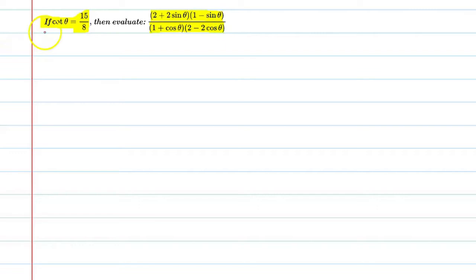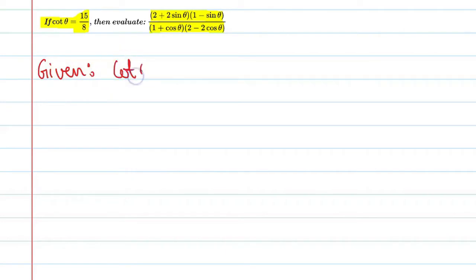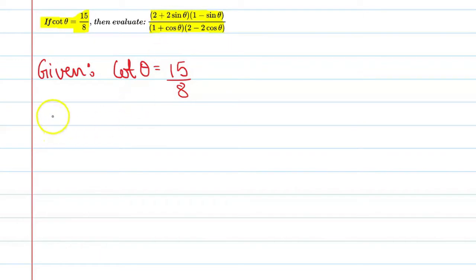First of all, we will write the given thing. The given in the question is cot theta equal to 15 upon 8. We need to find the value of this expression. Let's start the solution.